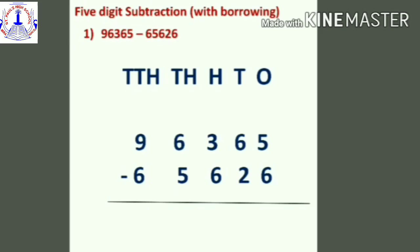Have you all understood, students? Now here is five-digit subtraction with the borrowing method. Again you have to write the digits according to their places.